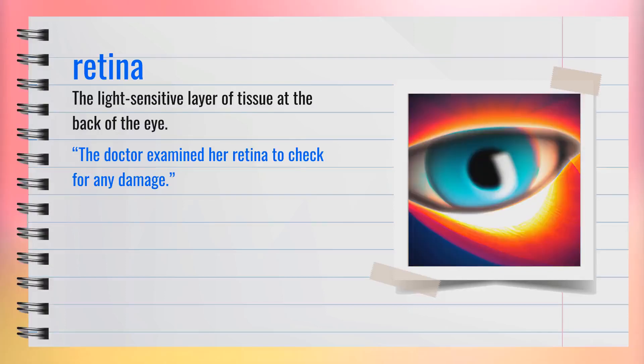The word retina, spelled R-E-T-I-N-A, is a noun. It refers to the light-sensitive layer of tissue at the back of the eye. For example, the doctor examined her retina to check for any damage. The retina is crucial for vision as it converts light into neural signals.